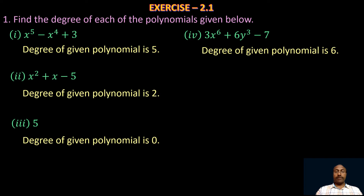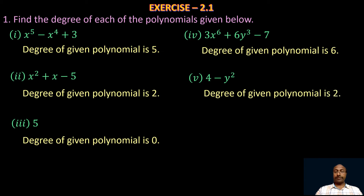Take the fifth one: 4 − y². We can clearly notice that the degree of the given polynomial is 2. Take the sixth one: 5t − √3. This polynomial has two terms in the variable t, and the highest power of t is 1, so the degree of the given polynomial is 1.